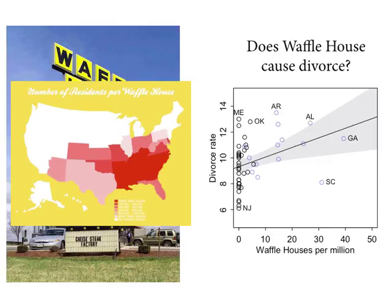It's just an accident that Waffle House ends up being associated with states with high divorce rates because the South has higher divorce rates. We're going to explore why today in the context of this example — not because we care about that problem, but because it's a good way to think about multiple regression.